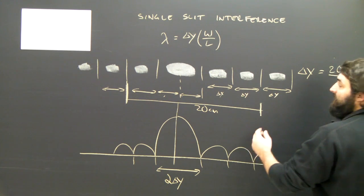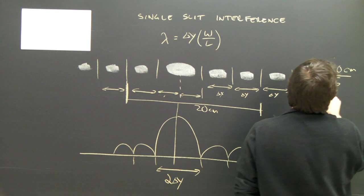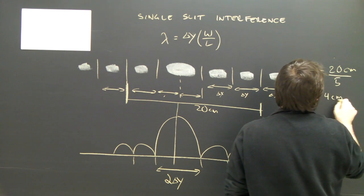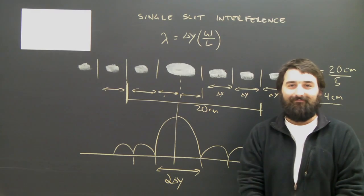then delta y is 20 centimeters divided by one, two, three, four, five, which is four centimeters. No problem.